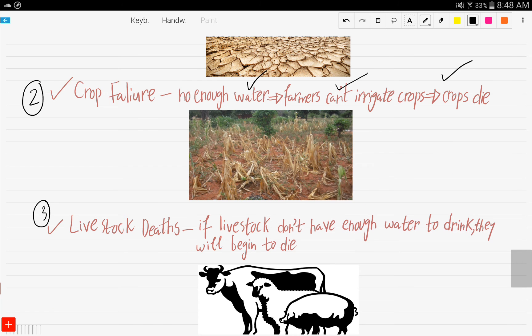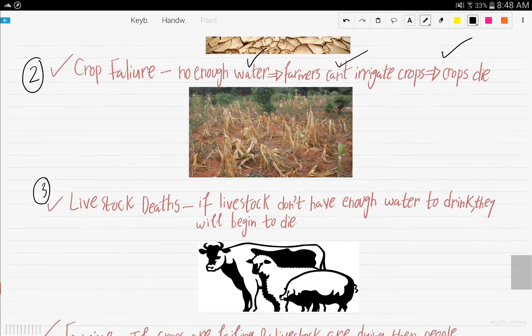The third implication of the inadequate supply of water is livestock death. If the livestock don't have enough water to drink, they will begin to die.